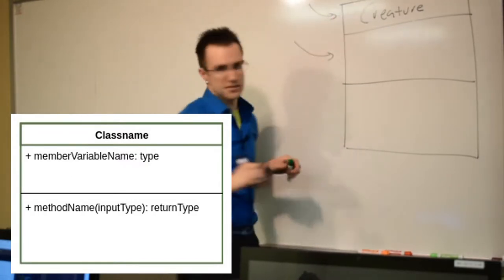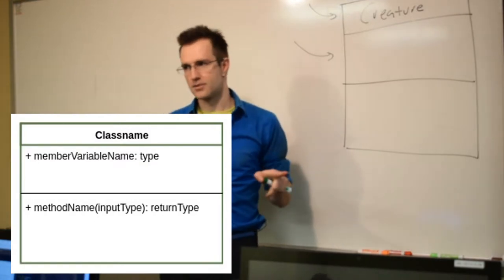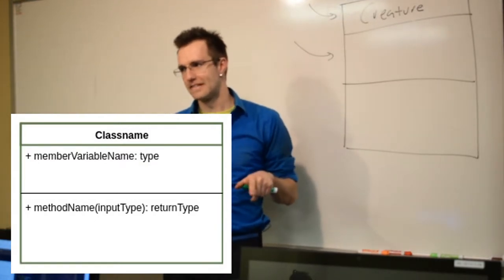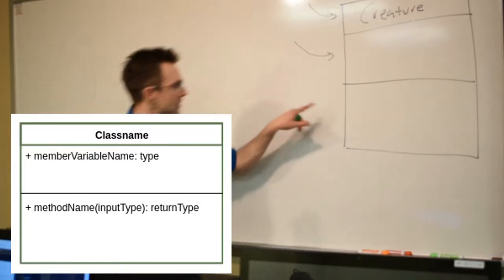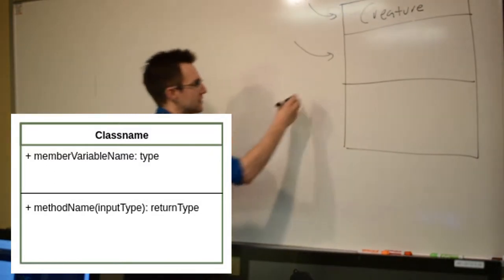So on the top box is the name of the class name. What goes in the middle box? I've already drawn one of these today.